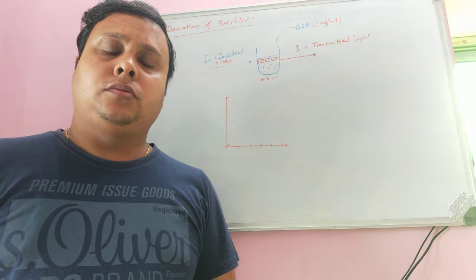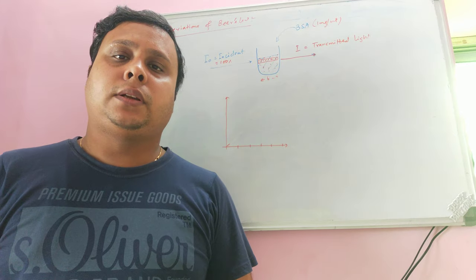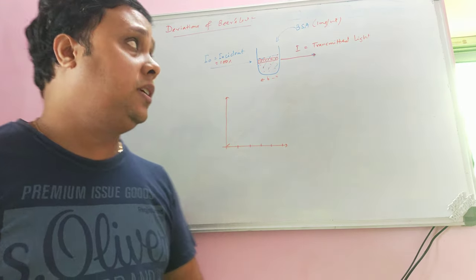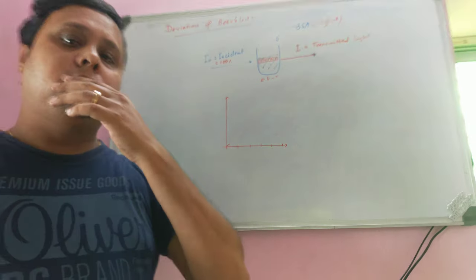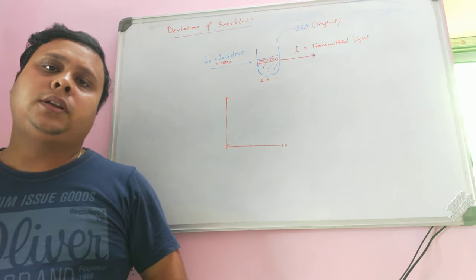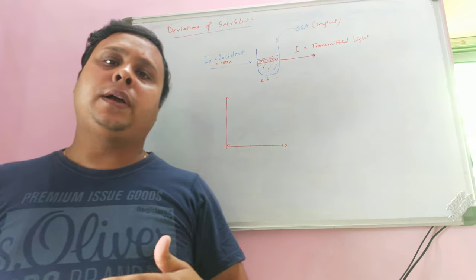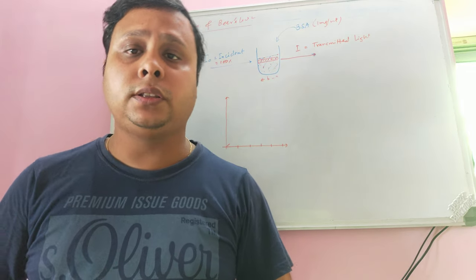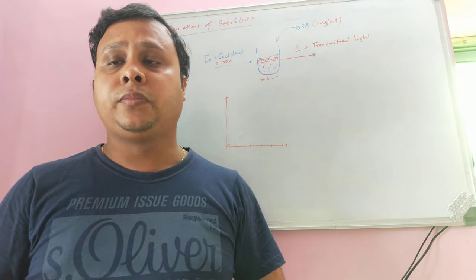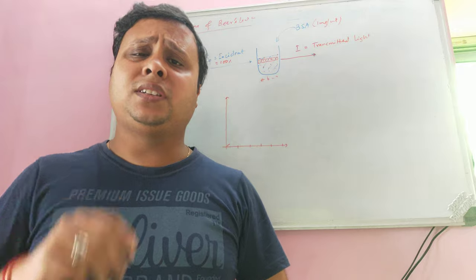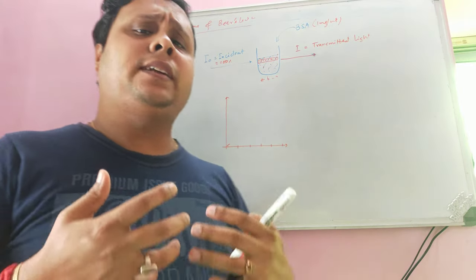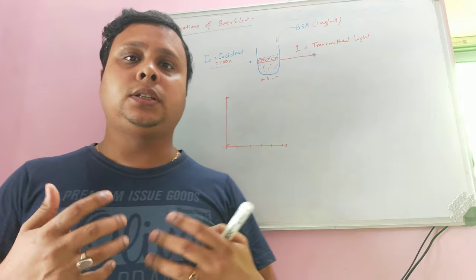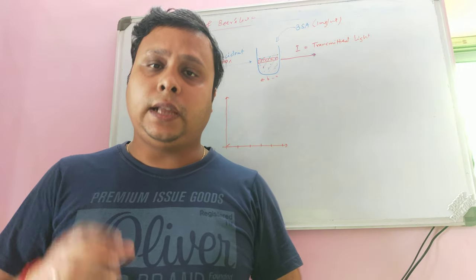In this video tutorial, we are going to focus on the deviations of Beer's Law. If you don't know what Beer's Law is, I recommend you go back to my previous video explaining the Lambert-Beer Law. In simple terms, Beer's Law states that the amount of light absorbed by a material is directly proportional to the concentration of the absorbing molecules.